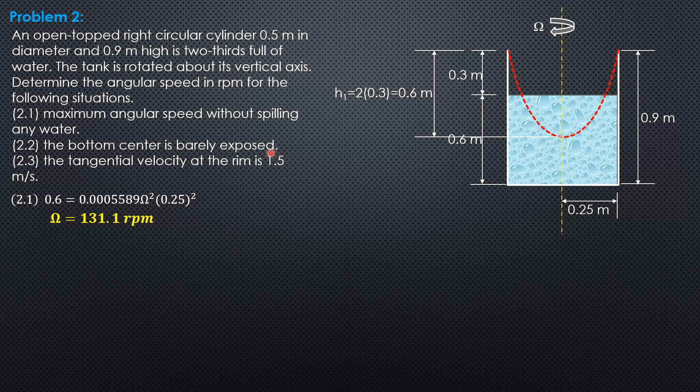The bottom center is barely exposed, so meaning to say the vortex exactly forms here. So h is 0.9. That would be the surface. So it doesn't matter the volume or amount of water that is spilled because we are only asked for the angular speed. So 0.9 equals 0.0005589 omega squared times radius squared. So omega is equal to 160.5 rpm.